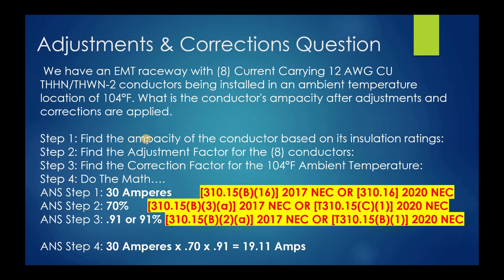It's a very simple question that comes on exams, so let's try to solve it. There are a few things we have to look for. Number one: find the ampacity of the conductor based on its insulation rating. Next, find the adjustment factor for those eight current-carrying conductors. Then find the correction factor for the ambient temperature, since it's other than what's given in the ampacity tables. Finally, we just do the math.